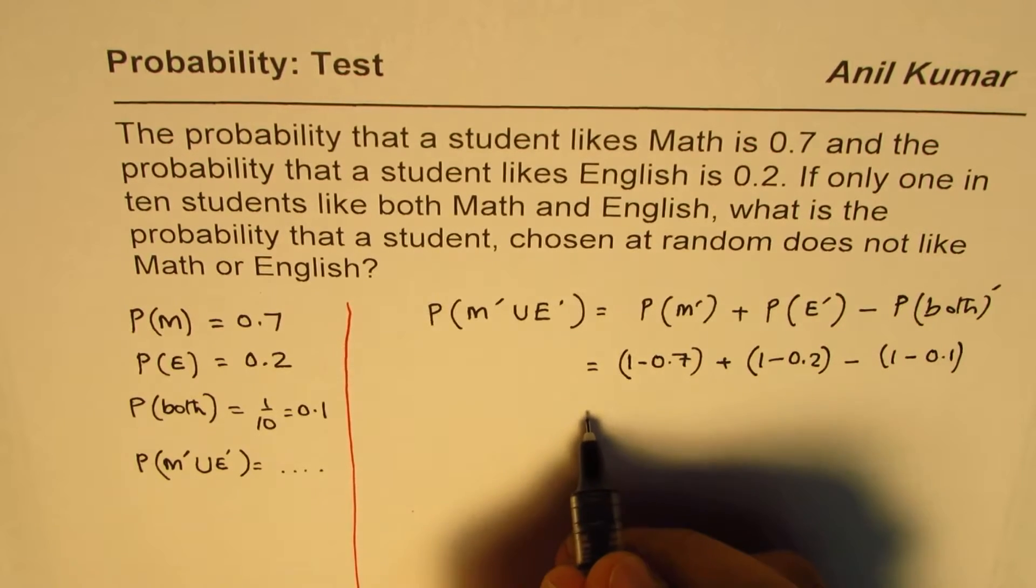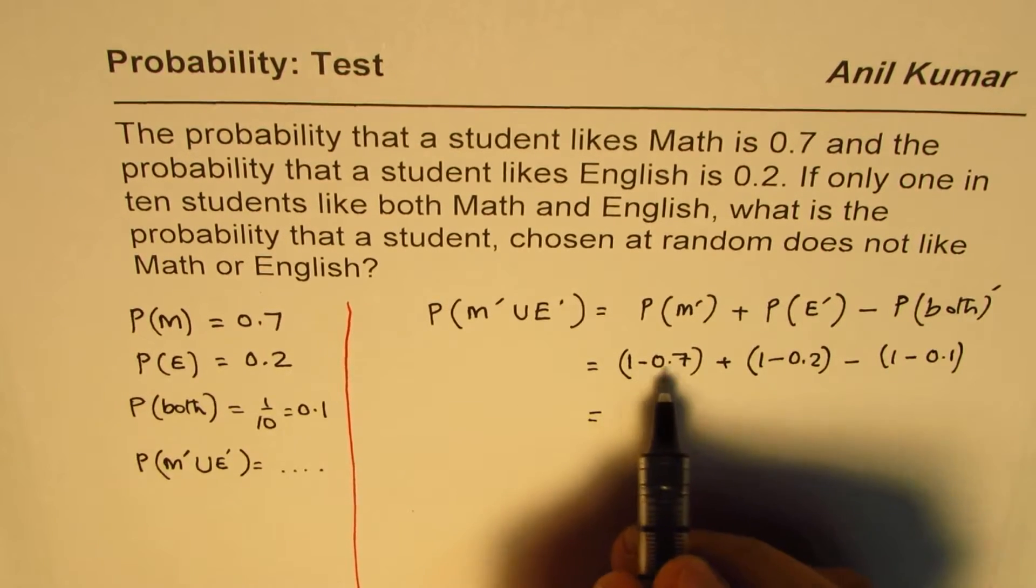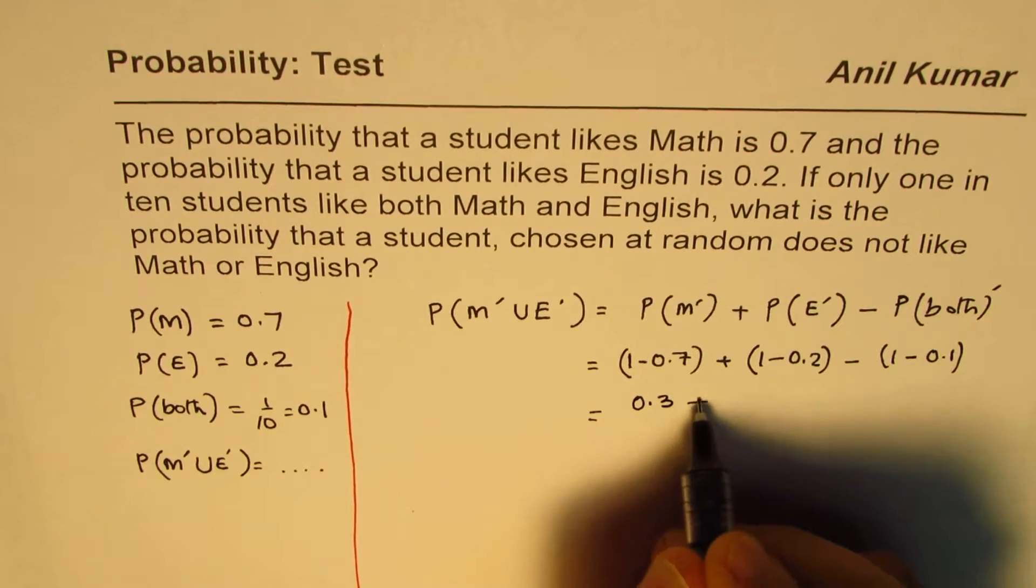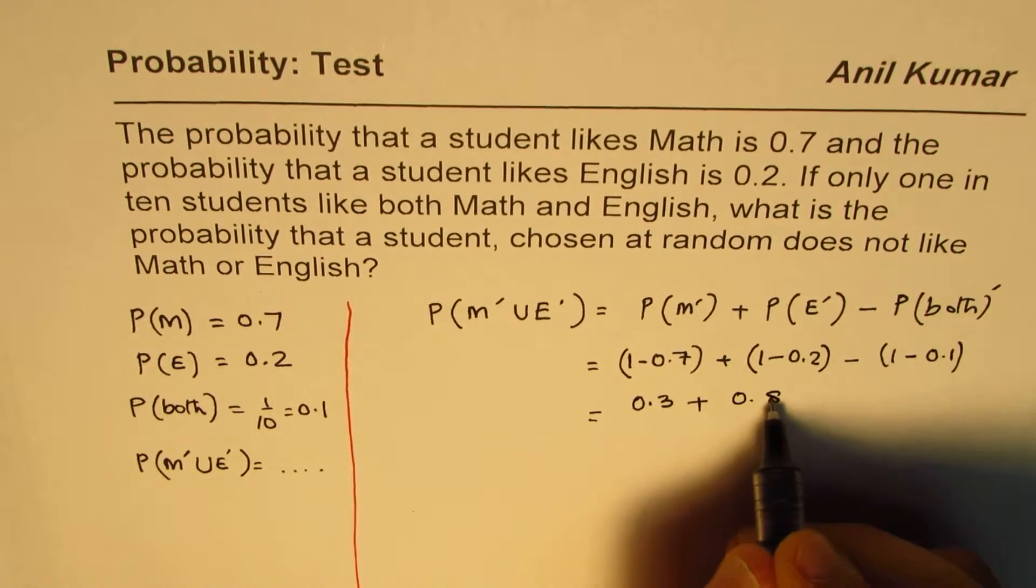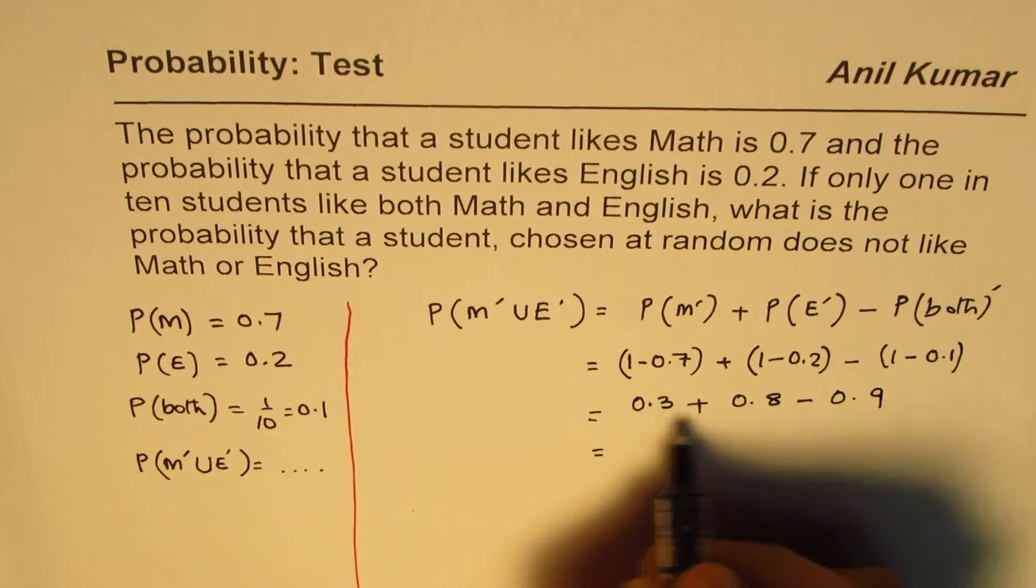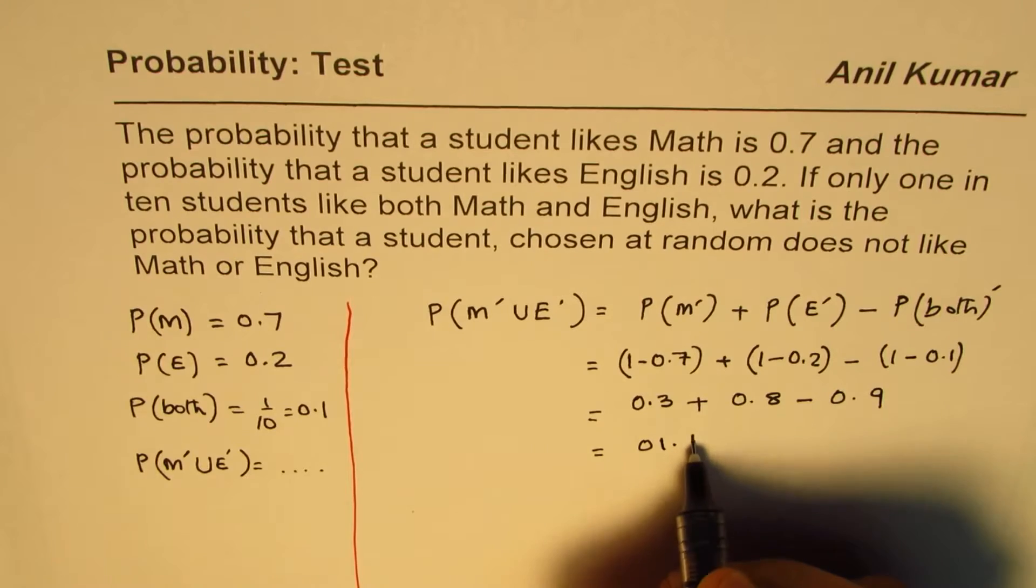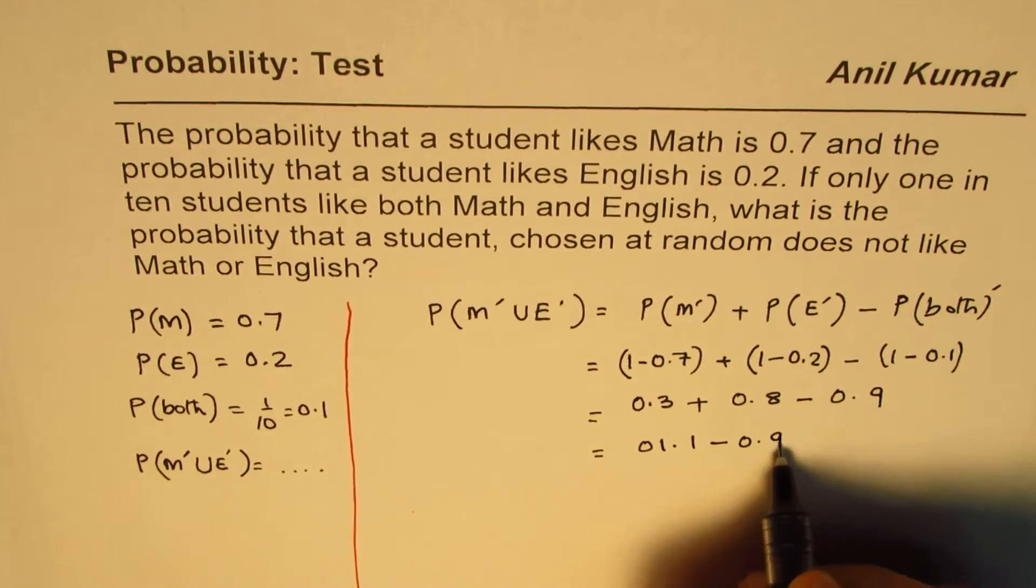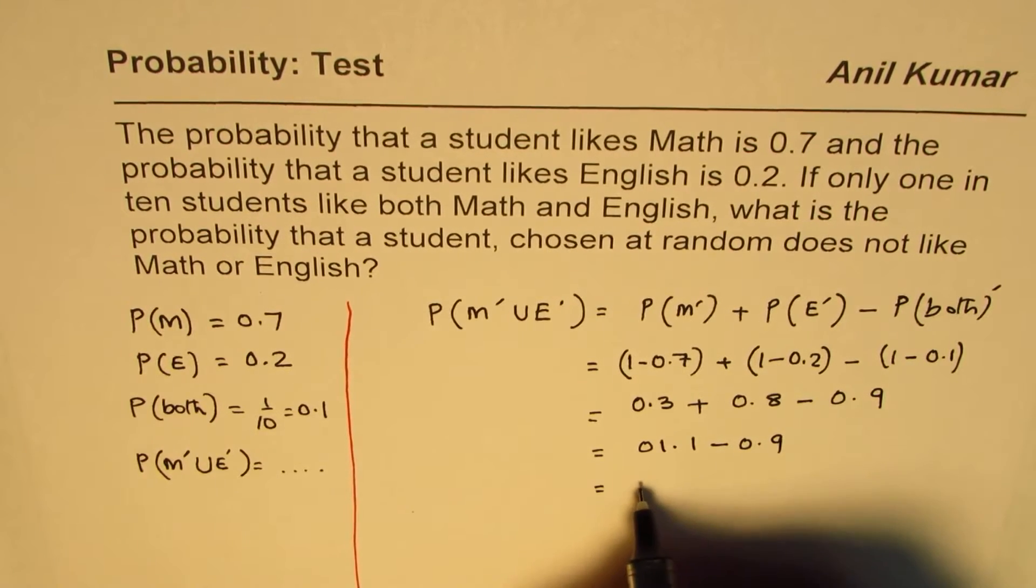So that gives us the probability 1 minus 0.7 is 0.3 plus that is 0.8 take away 0.9. So that is 1.1 take away 0.9, let me do it in steps. And that gives us the probability as 0.2.